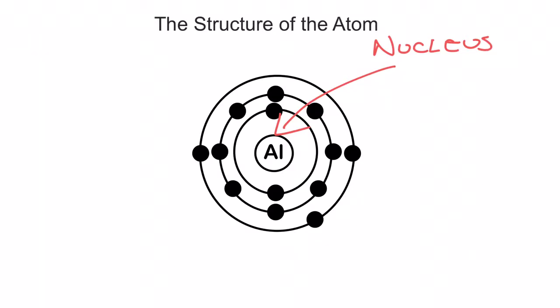It's comprised of protons and neutrons. It's got a net positive charge because your protons have a positive charge. Your neutrons have a neutral charge or no charge.